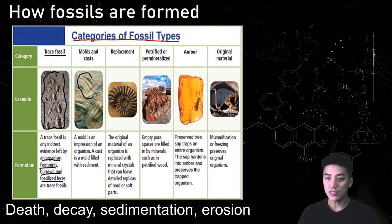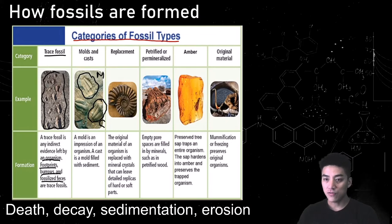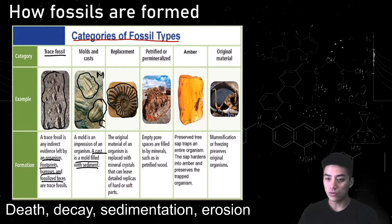Next you have molds and casts. A mold is an impression left behind by the organism, and a cast is a mold filled with sediment — it's like a 3D model. A cast is in some ways a replacement, because the original material of the organism is replaced with mineral crystals. Sometimes you might have hollowed-out bones filled with sand and other minerals, leaving behind really detailed replicas of the organism.